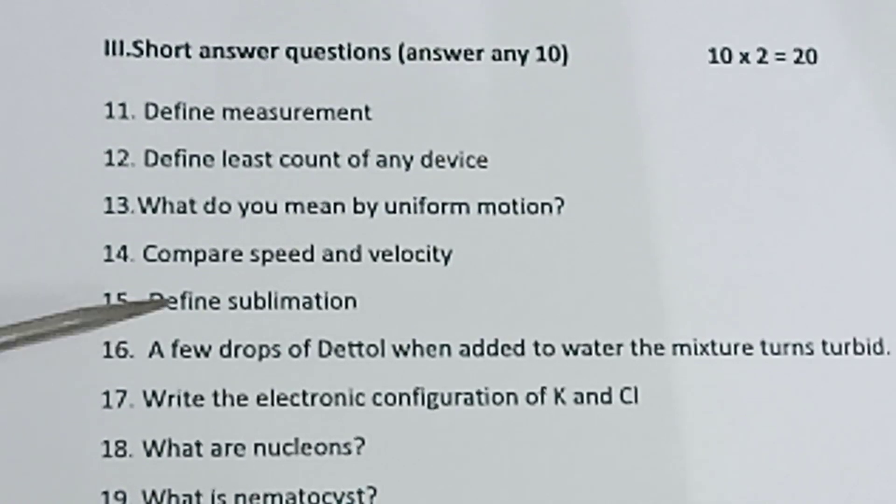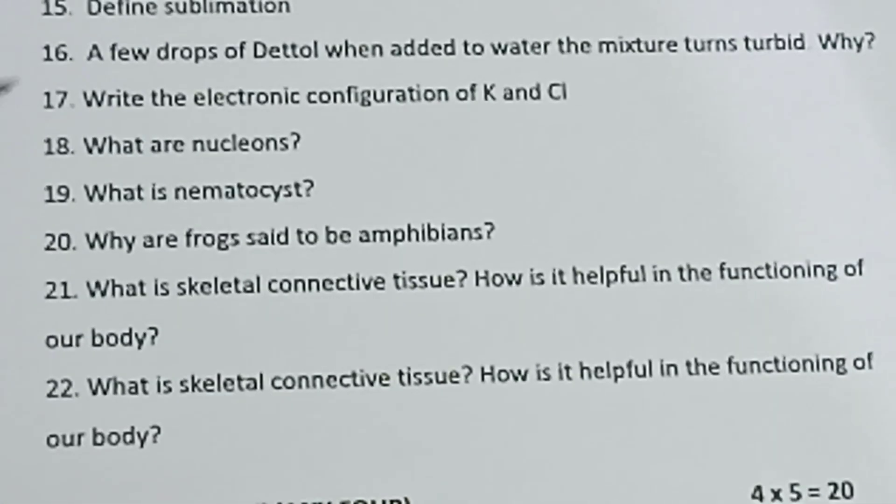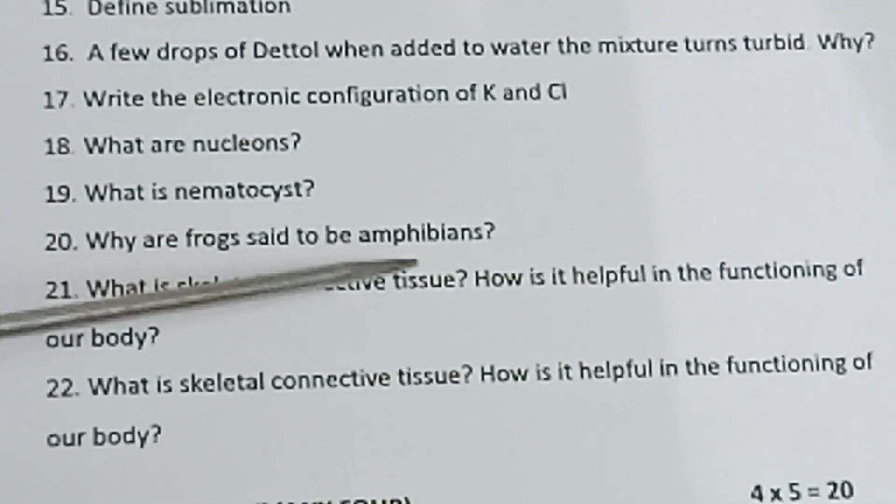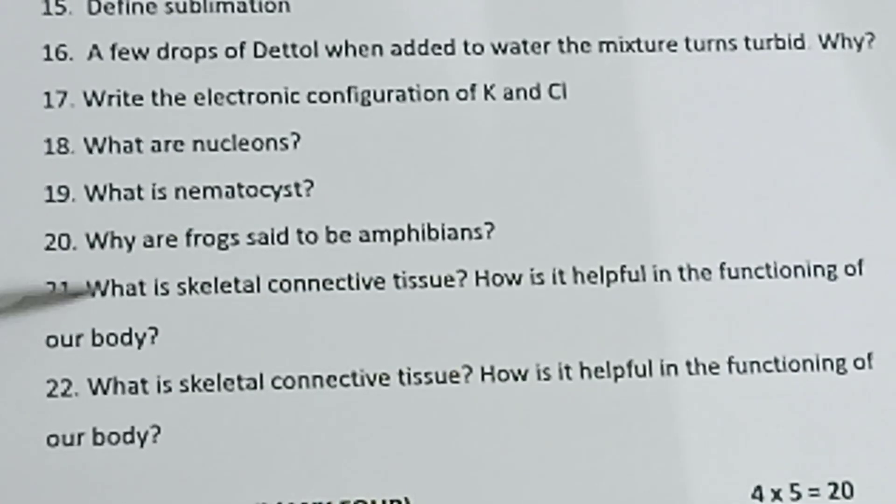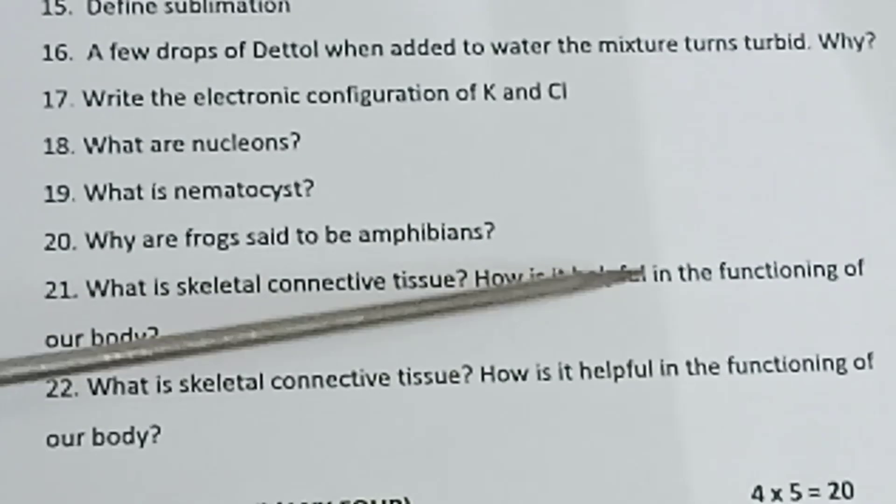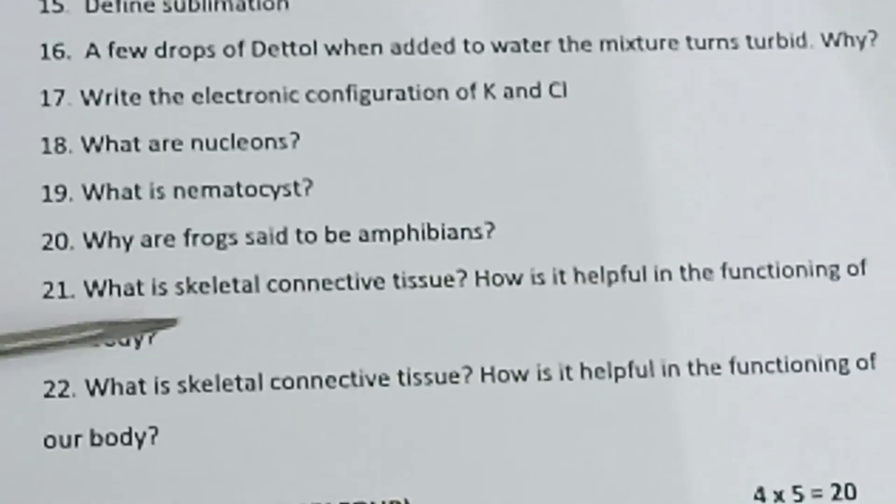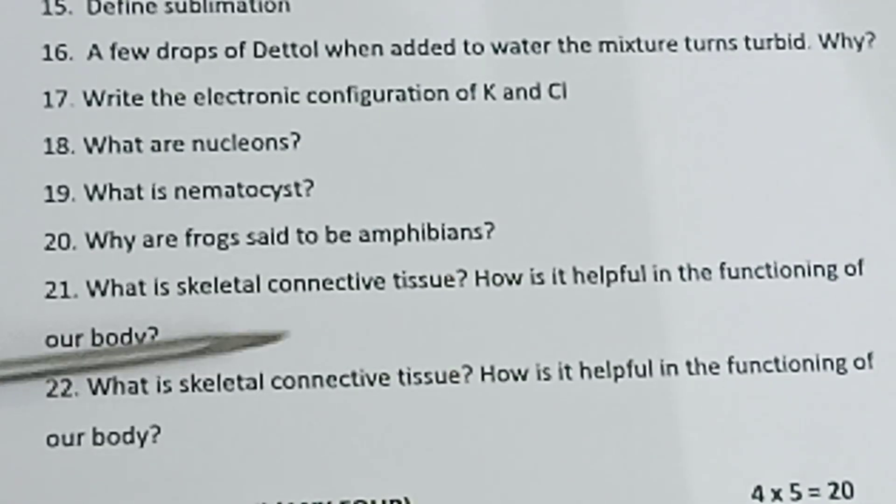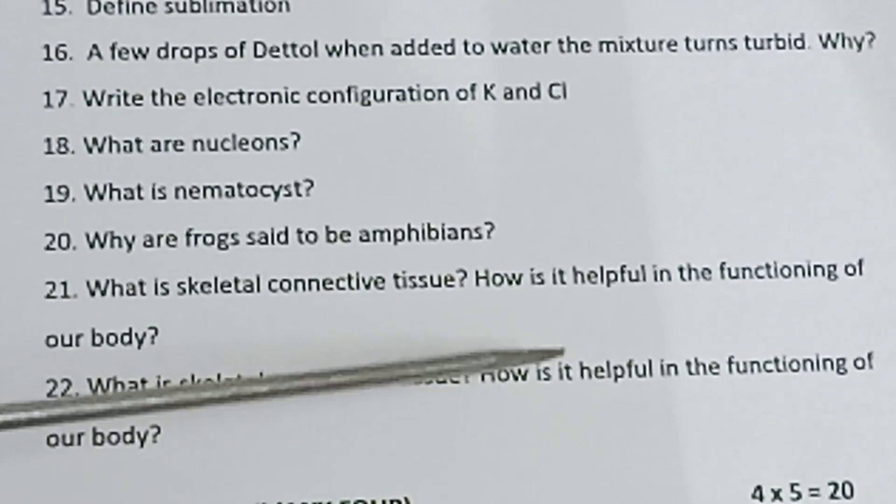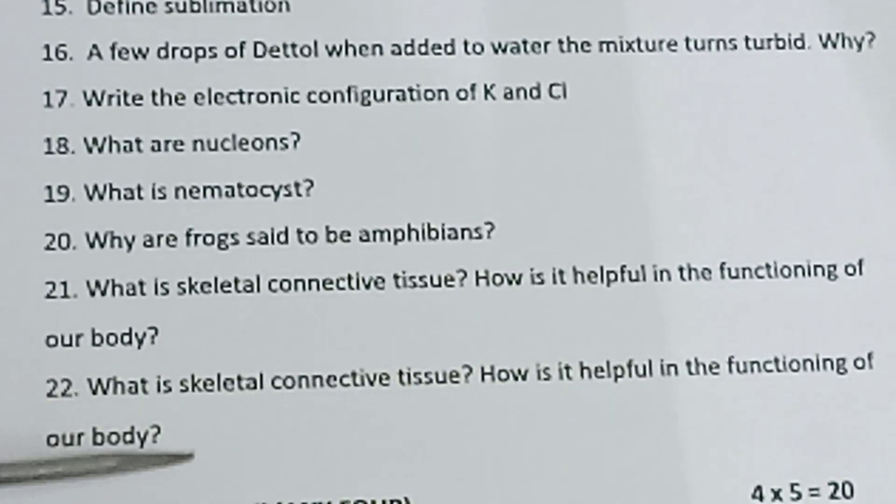Question 17: Write the electronic configuration of K and Cl, potassium and chlorine. Question 18: What are nucleons? Question 19: What are nematocysts? Question 20: Why are frogs said to be amphibians? Question 21: What is skeletal connective tissue? How is it helpful in the functioning of our body? Question 22: What is skeletal connective tissue? How is it helpful in the functioning of our body?